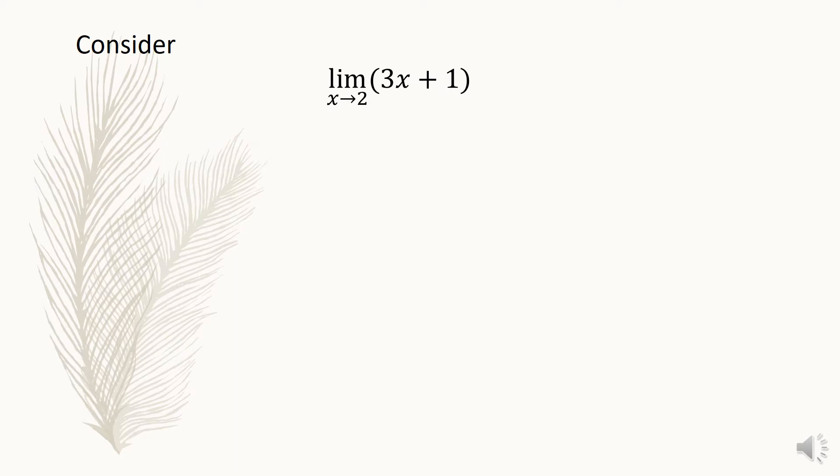Let us now consider the function 3x plus 1. To define the limit of 3x plus 1 as x approaches 2, we know that the value of a is 2. It may or may not be in the domain of 3x plus 1. Now, let us find the values of x approaching 2 from its left.